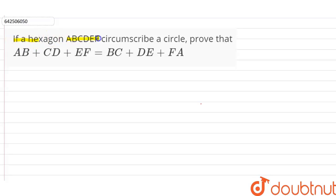If a hexagon ABCDEF circumscribe a circle, then prove that AB plus CD plus EF equals BC plus DE plus FA.